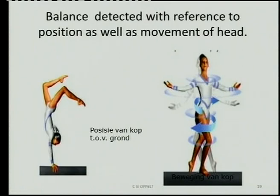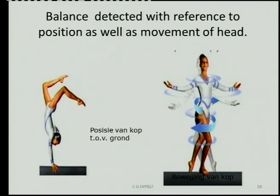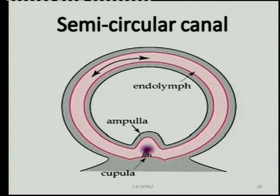Balance is controlled by your cerebellum. There are two aspects to balance: the position of your head in relation to the ground — whether you're lying flat or upright — and the movement of your head. Those are the two types of stimuli that generate the impulse perceived as balance. Remember, hearing is interpreted by your cerebrum, while the cerebellum controls balance, and that is what happens inside the semicircular canal.